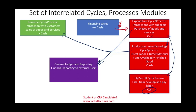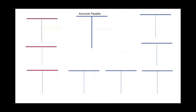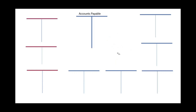The point is to understand why they are important and how they relate to each other. From a T-account or journal entry perspective, it's very important to understand how everything fits together. When you have an expenditure cycle, first you're going to buy something, then you're going to pay for it — you buy something on credit. What I'm going to show you is how many things affect accounts payable, which is buying on credit and then paying.